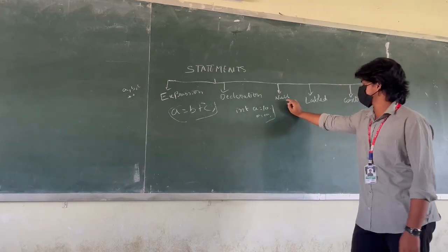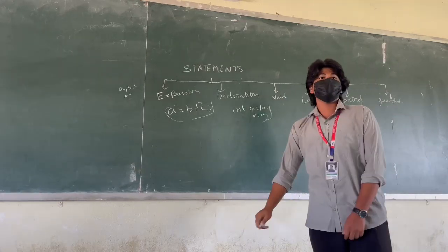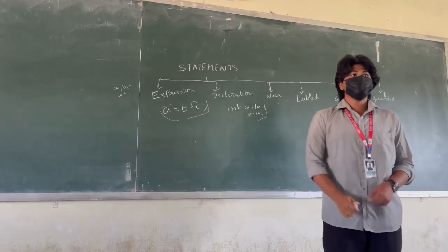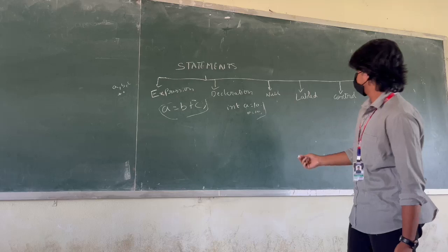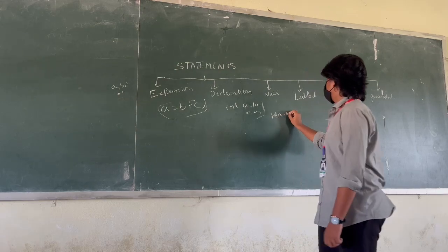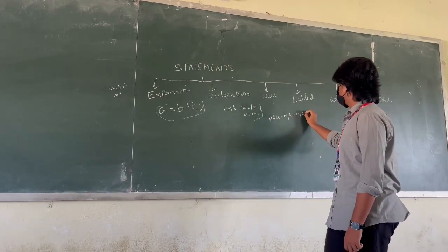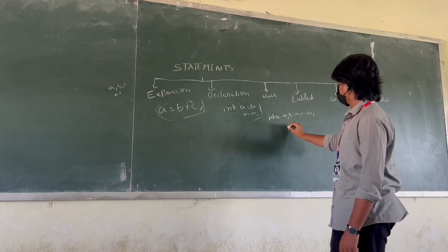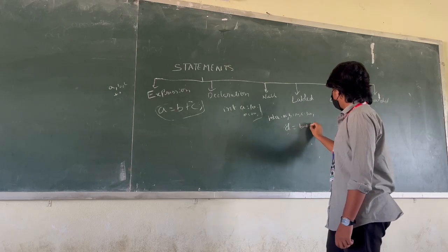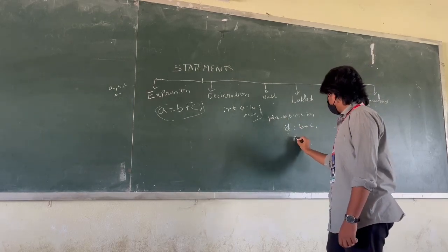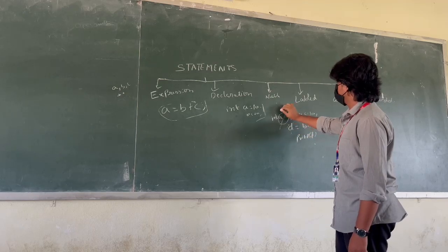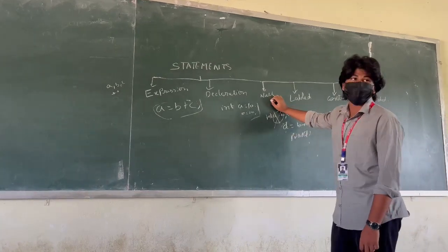Null is like removing dead code. Dead code means the code which is not used in our program. Like, a is equal to 10, b is equal to 20, c is equal to 30. Here we use d is equal to b plus c. Here, print d. A is not used. By removing this, this is dead code. It is an example of null.